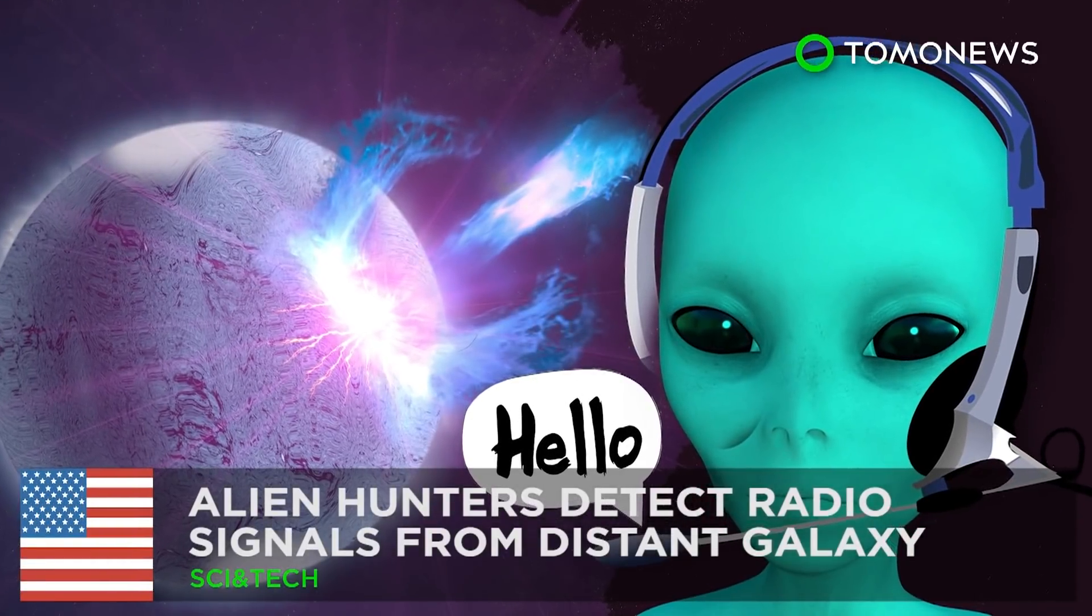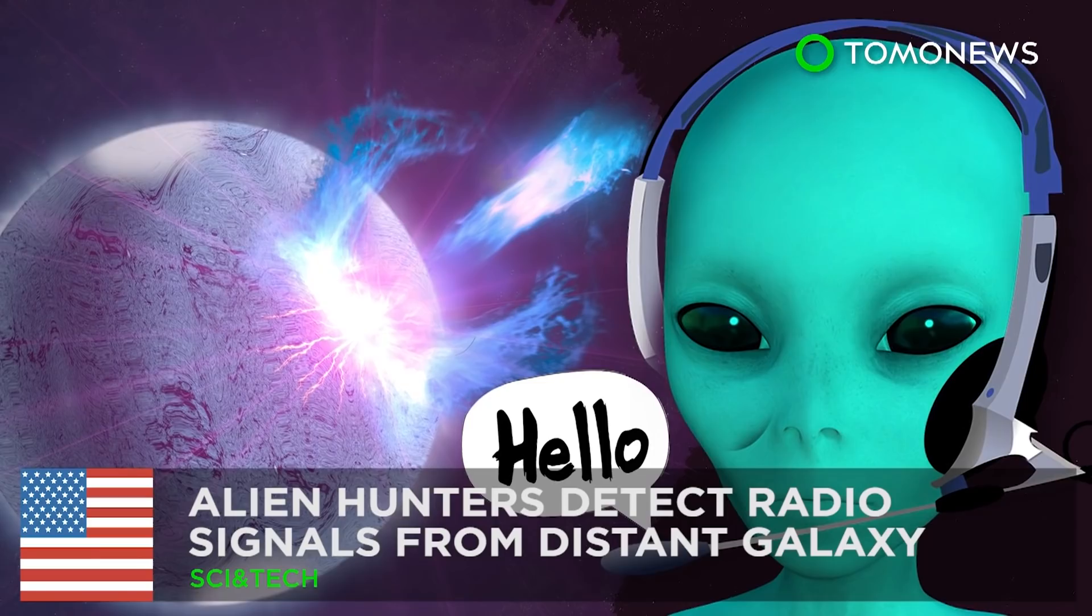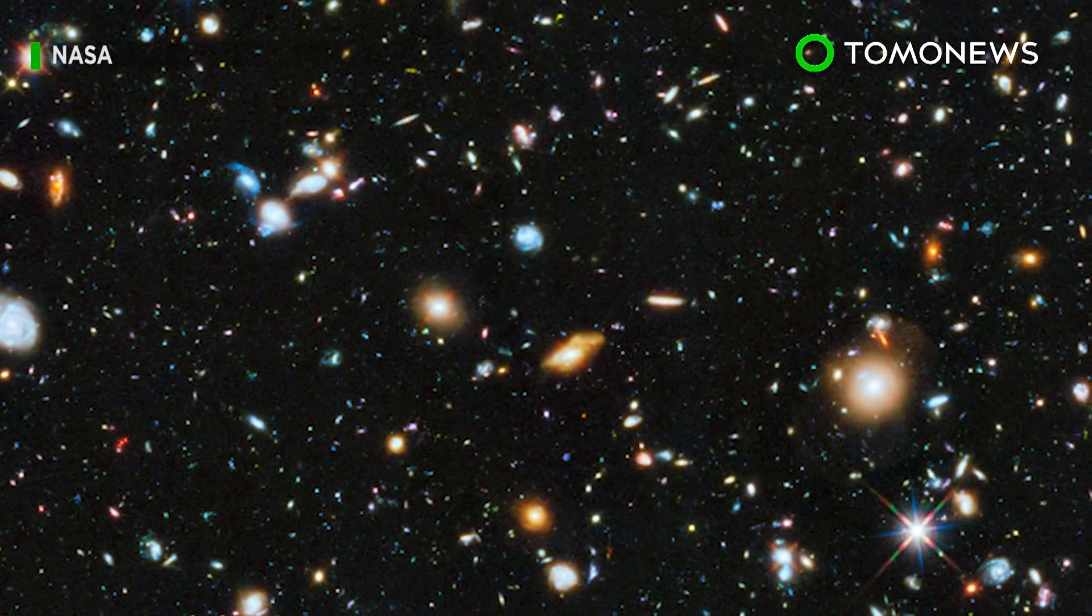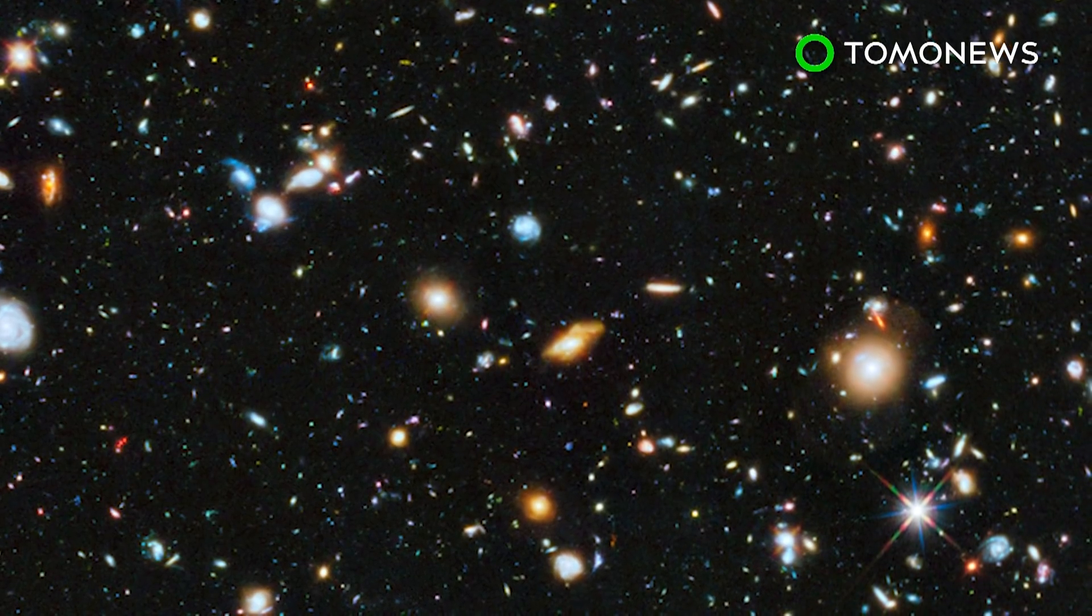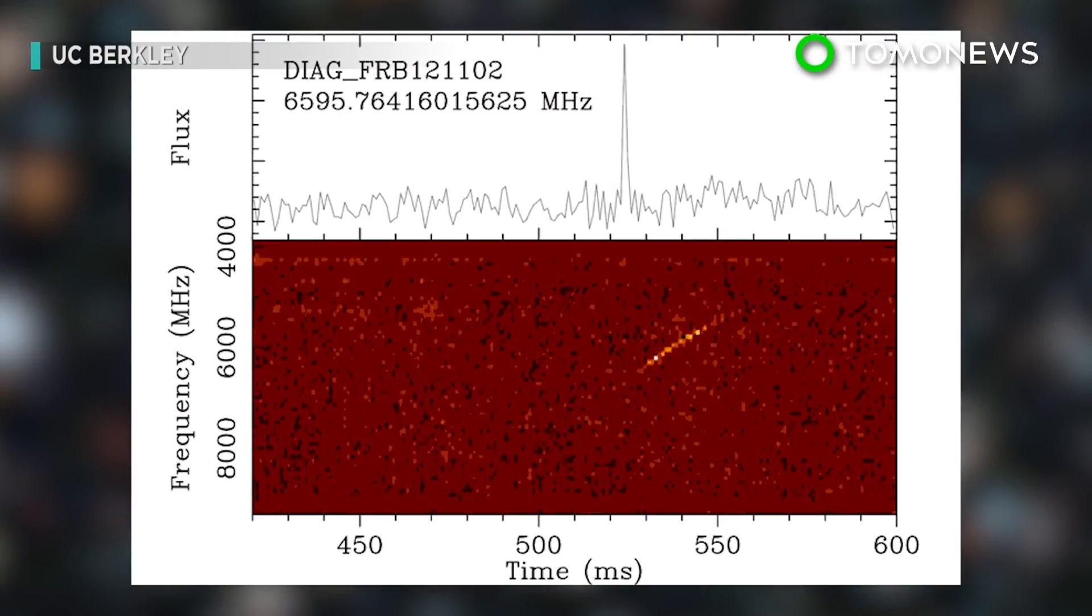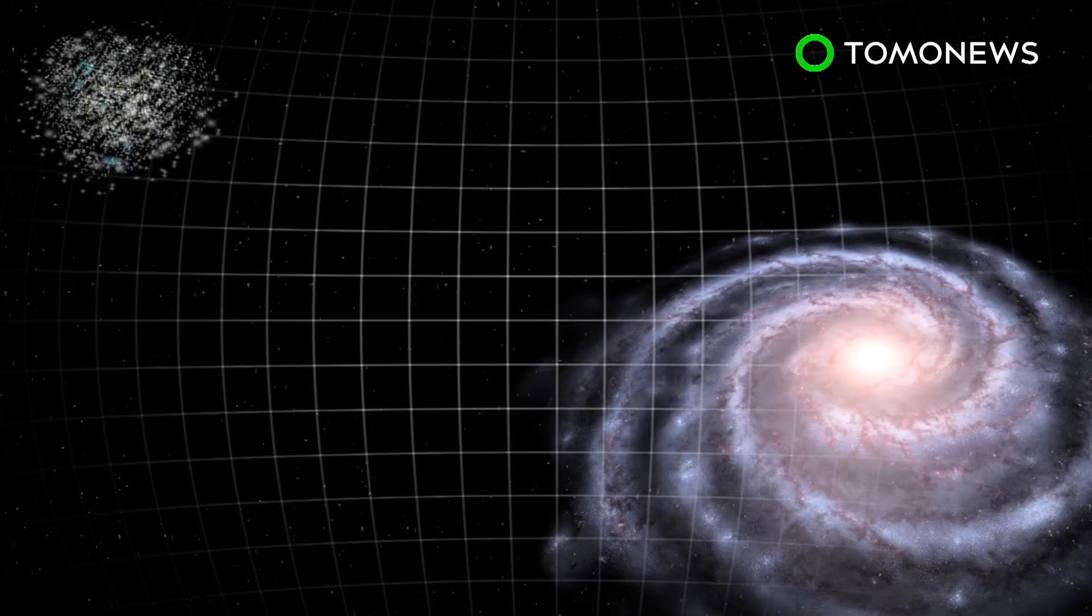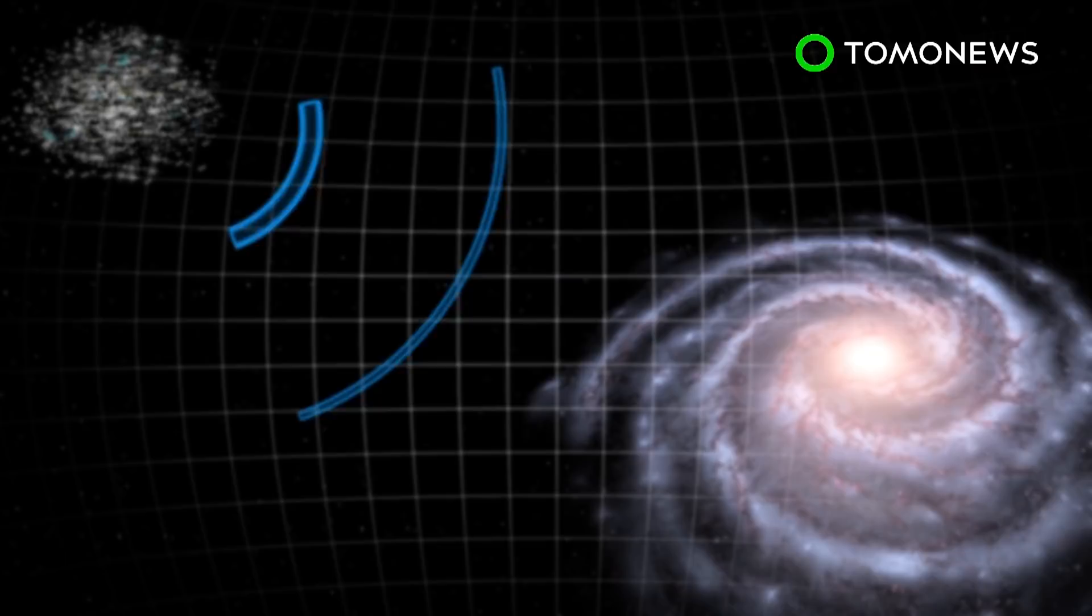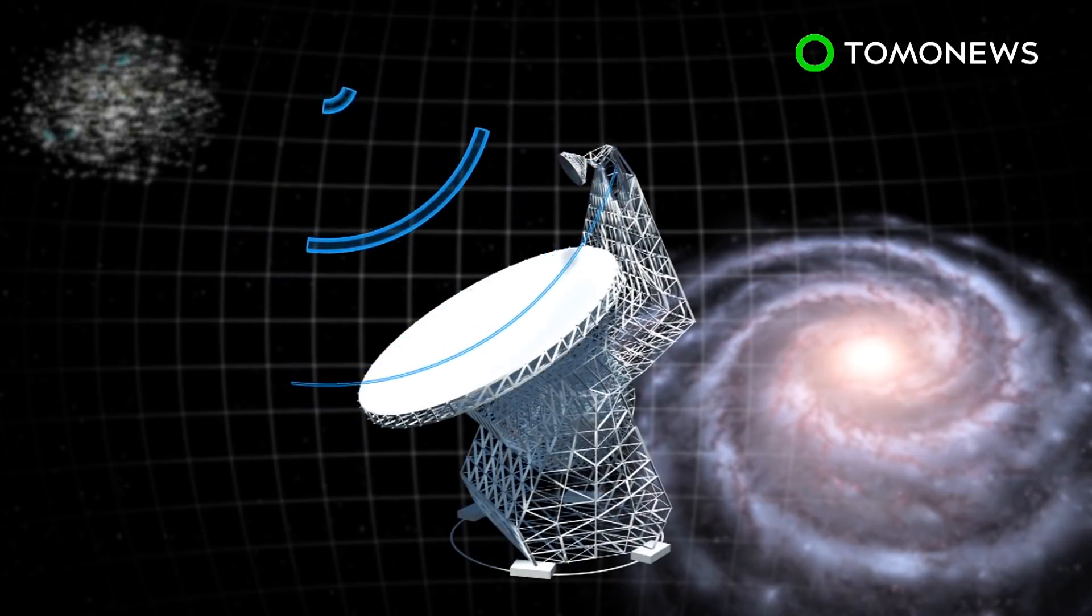Alien hunters detect radio signals from distant galaxies. Scientists searching out alien life were presented with a new hope last month when their equipment picked this up. This is a radio burst from another galaxy. Writing in the Astronomer's Telegram, scientists reported 15 fast radio bursts detected from a dwarf galaxy some 3 billion light-years from our own.